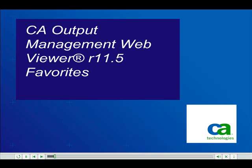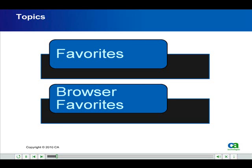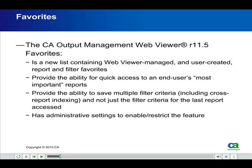CA Output Management Web Viewer Release 11.5 Favorites. In this presentation, we'll be shown highlights of the Web Viewer Favorites and of the Browser Favorites. The CA Output Management Web Viewer Release 11.5 Favorites is a new list containing Web Viewer-managed and user-created report and filter favorites, providing the ability for quick access to an end user's most important reports, the ability to save multiple filter criteria including cross-report indexing, and not just the filter criteria for the last report accessed, and has administrative settings to enable and restrict the feature.